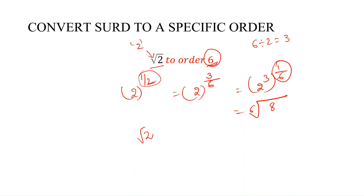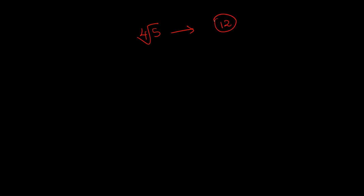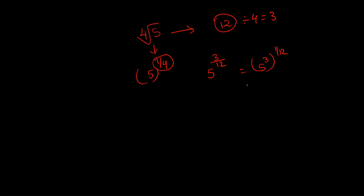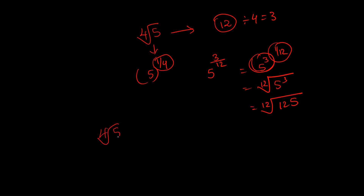Next example: the 4th root of 5, converted to order 12. Write it as 5 to the power 1 by 4. Since 12 divided by 4 is 3, multiply both numerator and denominator of 1 by 4 by 3, giving 5 to the power 3 by 12. Using the exponent rule, this is 5 cubed whole to the power 1 by 12, which is the 12th root of 5 cubed. Since 5 cubed is 125, the 4th root of 5 converted to order 12 is the 12th root of 125.